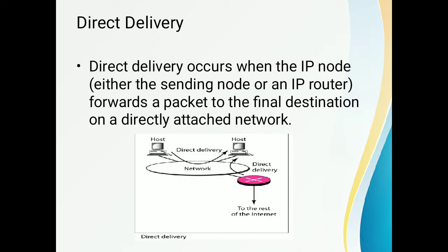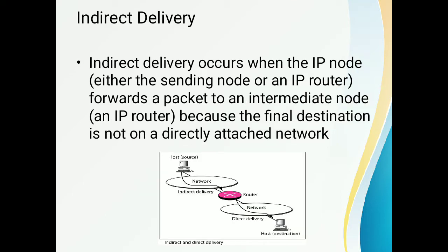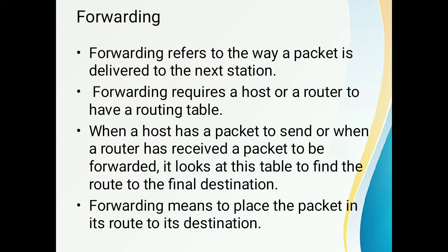Direct delivery occurs when the IP node forwards a packet to the final destination on a directly attached network. Indirect delivery occurs when the IP node forwards a packet to an intermediate node because the final destination is not on a directly attached network.